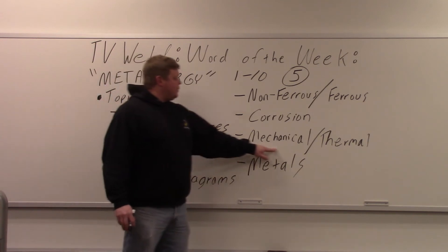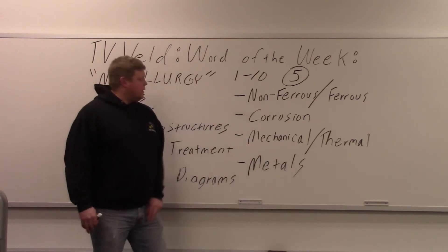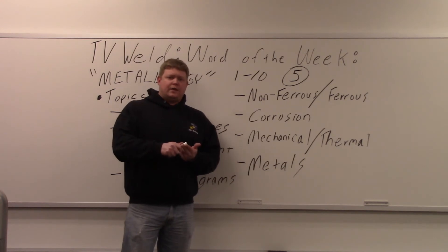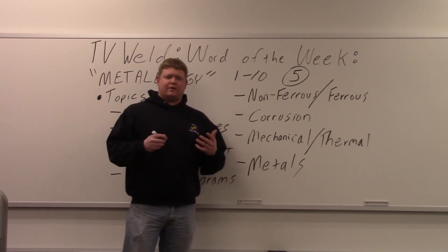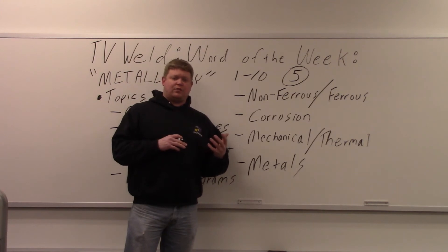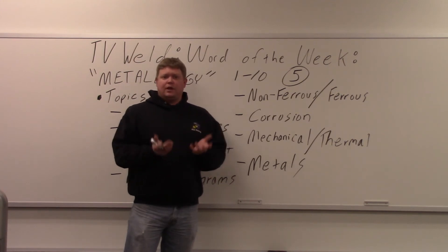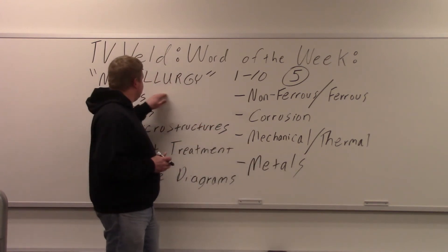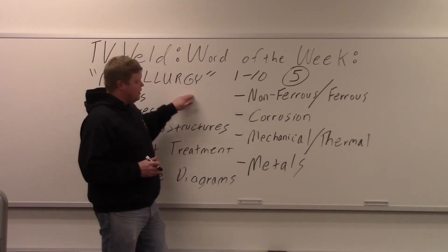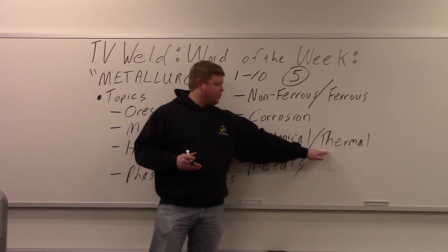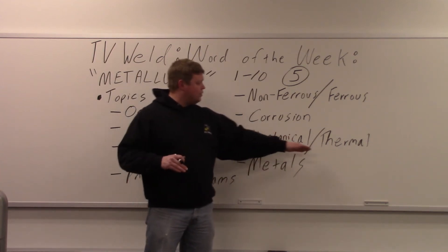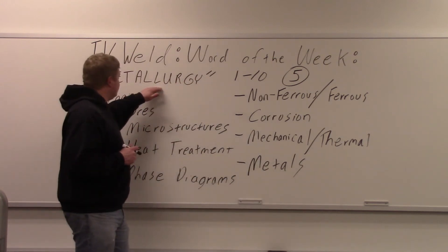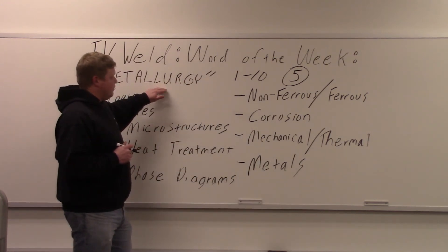Mechanical and thermal properties are also covered. Mechanical properties include tensile strength, the ability to resist torsion, and ductility — the ability to bend. Thermal and mechanical kind of go hand in hand; thermal covers things like why heat travels through aluminum so fast. Metallurgy is the study of all these types of topics.